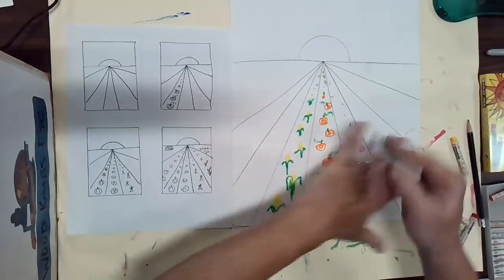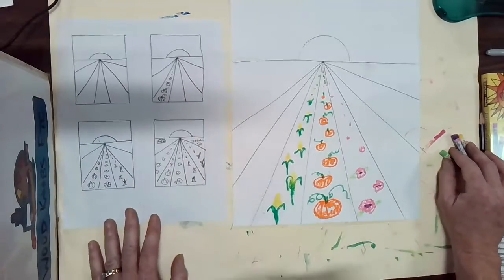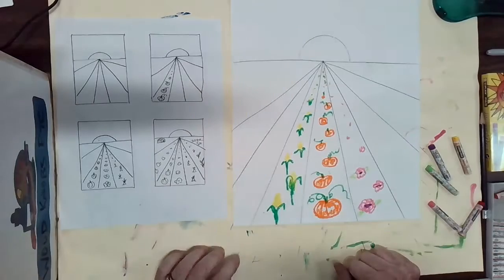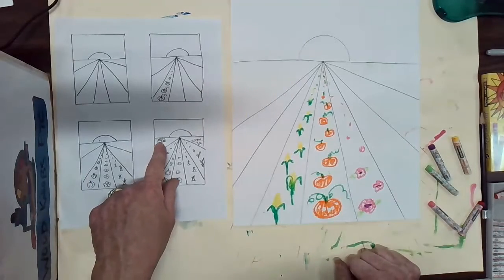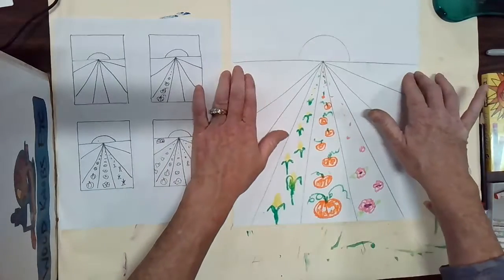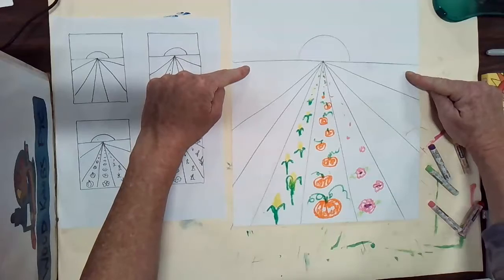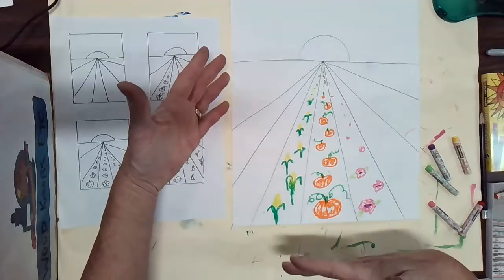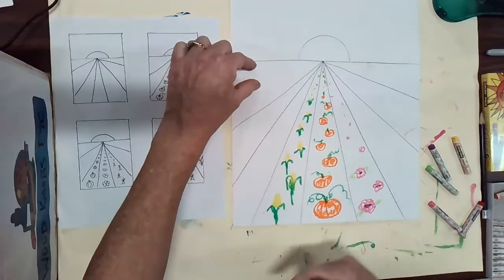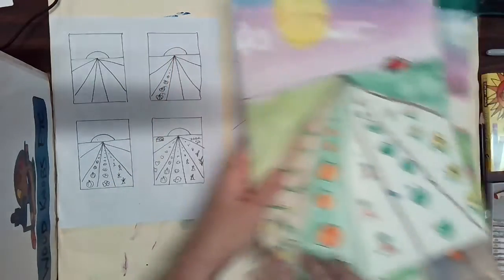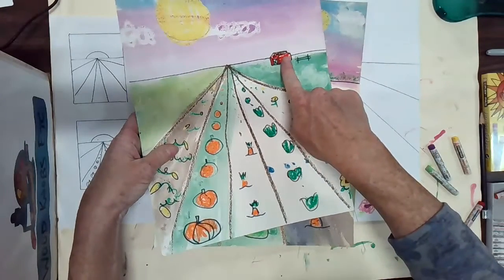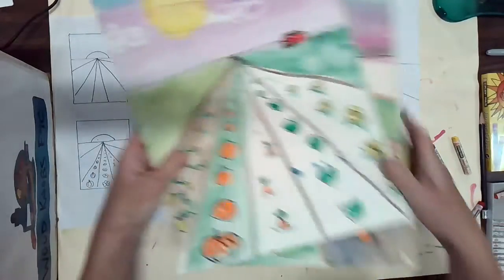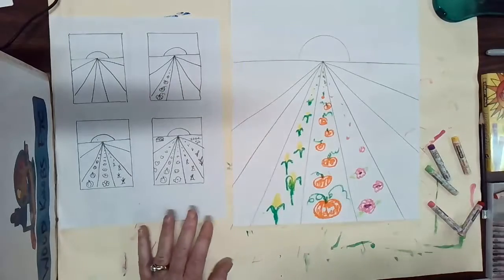Now once you have all of your crops finished you can add some small details. Now if I were to add a barn or a fence or any animals in the field, if they're way back here near the horizon would they appear big or small? They would appear small. So for example this barn is way back near the horizon line so it's pretty small. So you can add things like that to your paper.